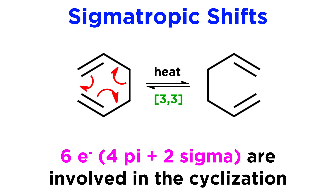That's why this is called a 3-3 shift. Once again, the number of electrons involved in the cyclization is 6 — 4 pi and 2 sigma — which is why this reaction is allowed, as the transition state can be thought of as aromatic in character, and therefore stabilized.